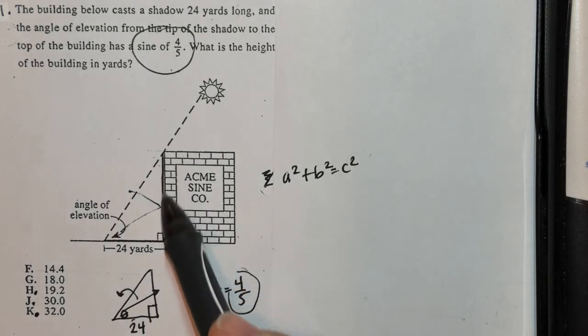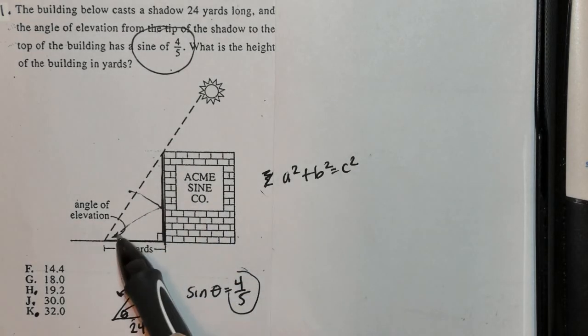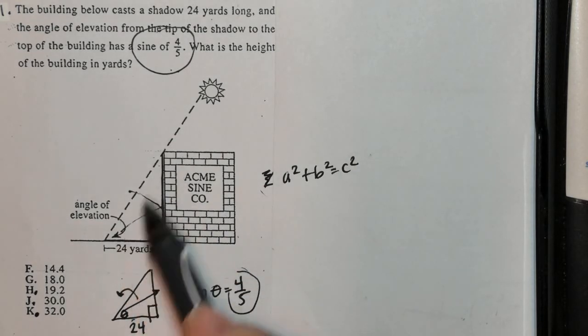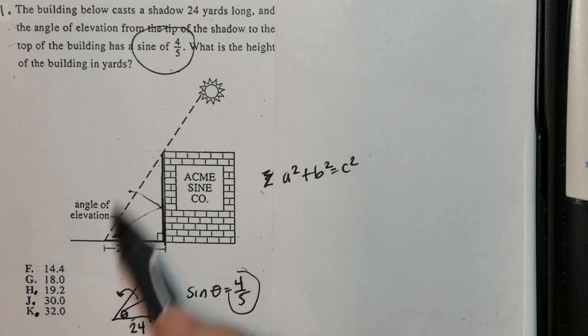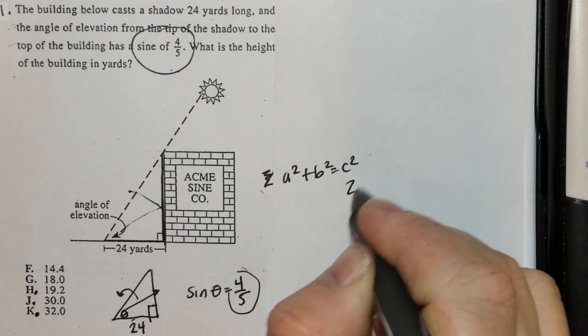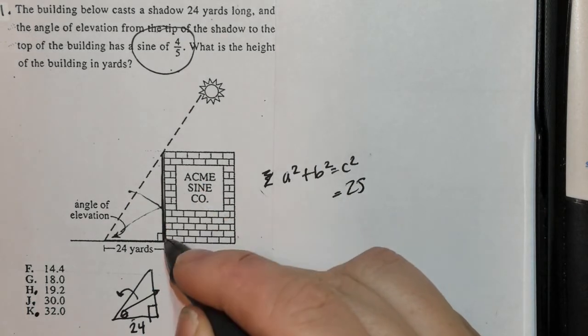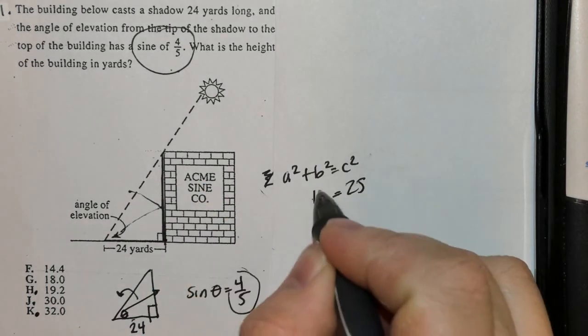So I know that this side is 4, and this is 5, because the sine of this angle of elevation is 4/5. C is always your longest side, so 5² is 25. I'm going to call this side b, which is 4. 4² is 16.